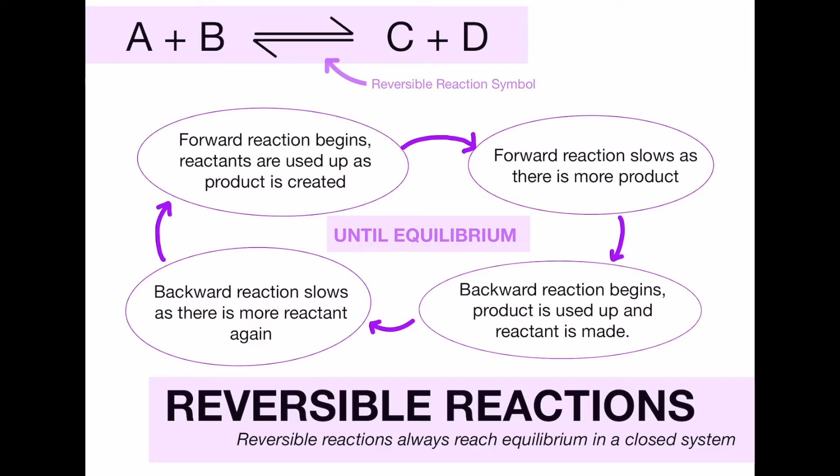Next we have reversible reactions. So at the bottom, a reversible reaction always reaches equilibrium in a closed system. First of all I want you to let me know in the comments any reversible reactions that you can think of because it will be really useful that you are aware of at least one or two that you could refer to in your exams if it came up. As you can see at the top the reversible reaction symbol instead of having the normal arrow that we would have in these equations, it's kind of half an arrow going forwards and half an arrow going backwards. So the way a reversible reaction works is A plus B would make a product C plus D but then that C plus D may react to produce A and B again. So if we start in the top left, the forward reaction begins, those reactants are used up as the product is created, so say you've got a lot of the A plus B and you don't have any of the C plus D yet, a load of that A plus B will create the products the C plus D.